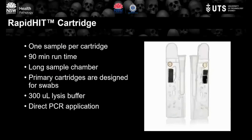The RapidHit ID system uses a primary cartridge where the sample is added. One cartridge holds and tests one sample, taking approximately 90 minutes. The sample chamber is long and narrow because it's designed for a swab, where the biological material is at the bottom. 300 microlitres of lysis buffer is added and then removed from the sample chamber before proceeding for direct PCR.